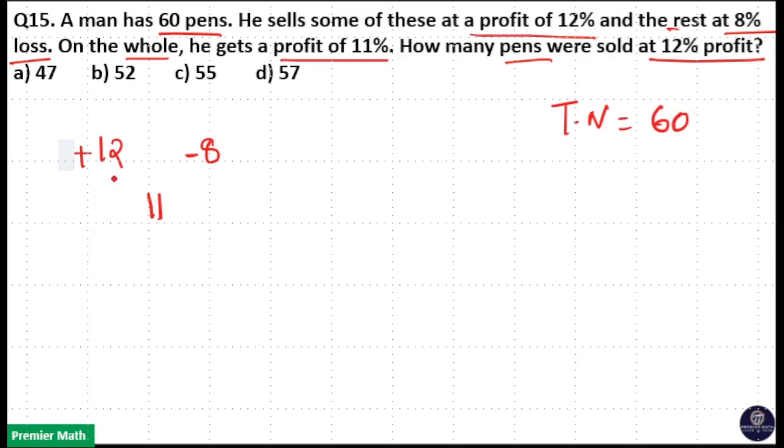When you use the allegation method, 12 minus 11 is equal to 1. 11 minus negative 8 is equal to 19.